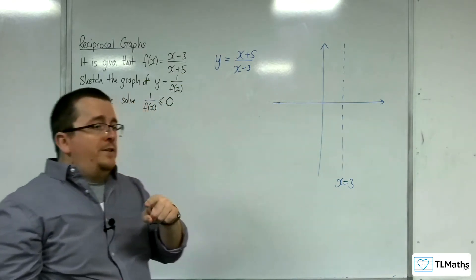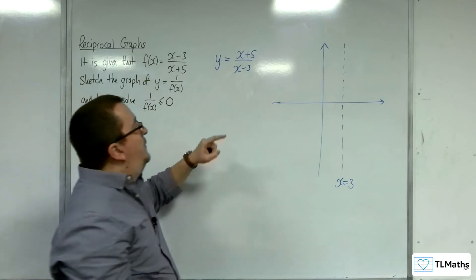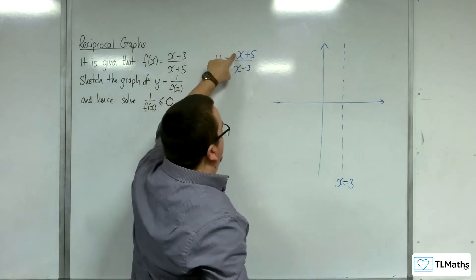We can also identify where it crosses the x-axis because that's when the numerator is 0 at minus 5.